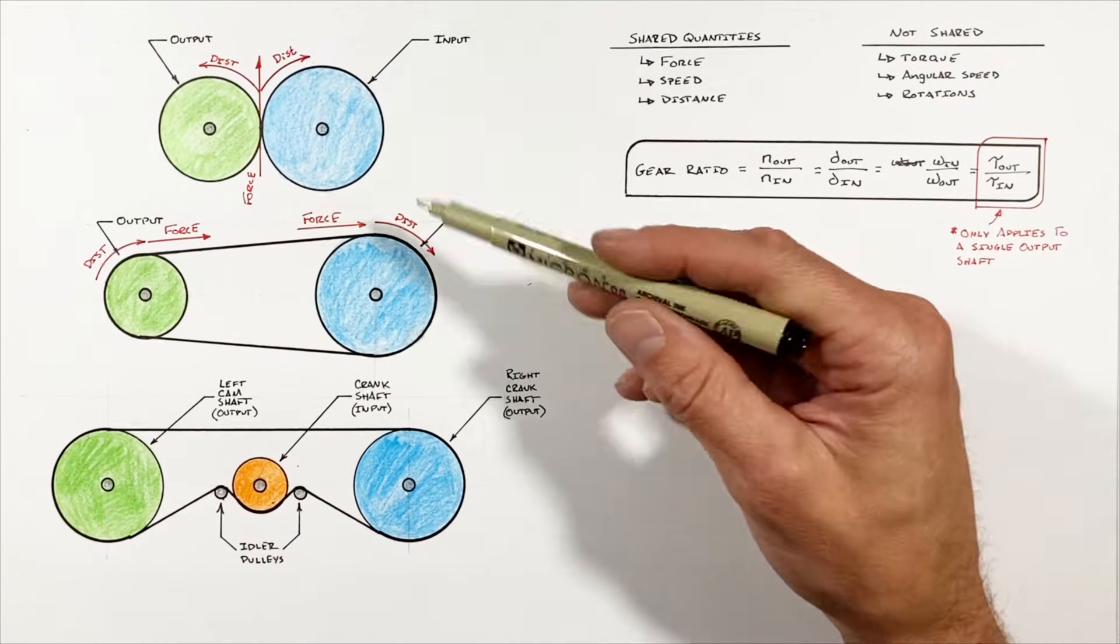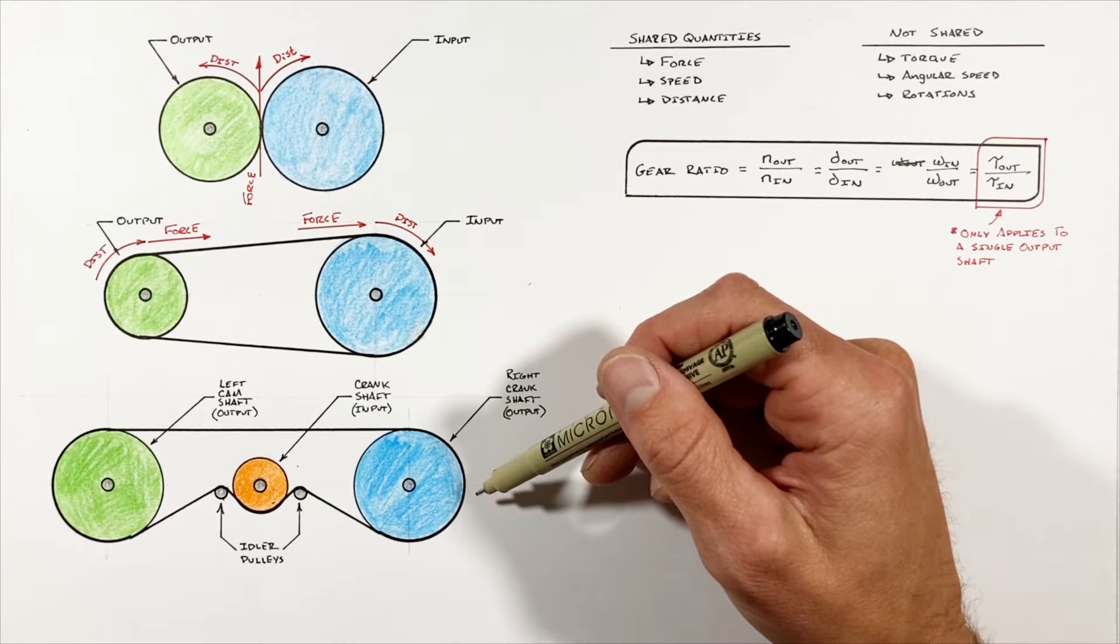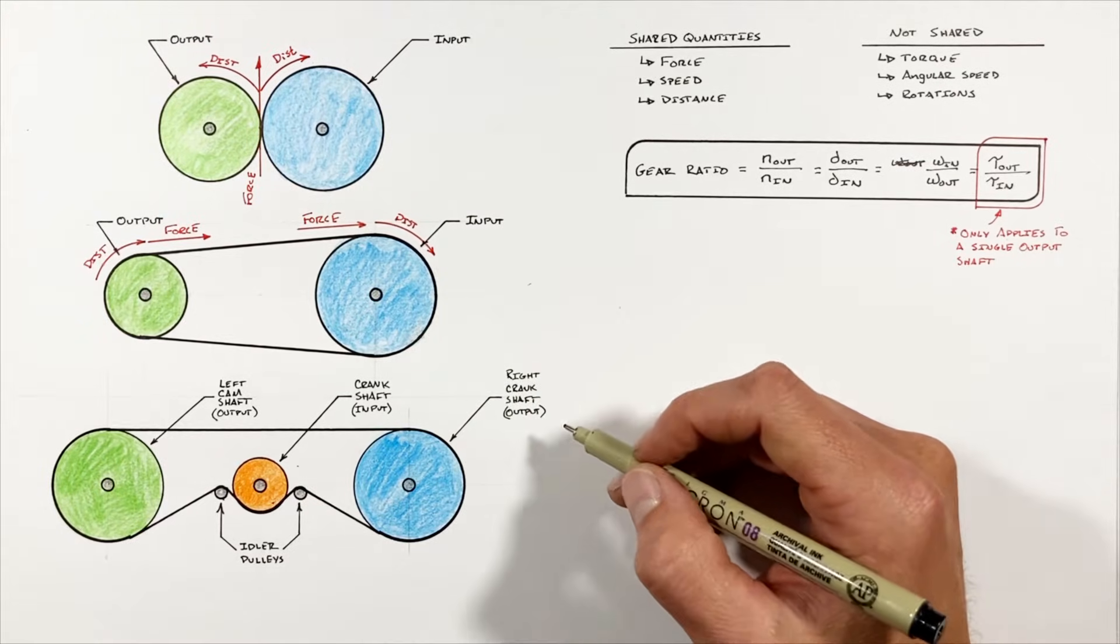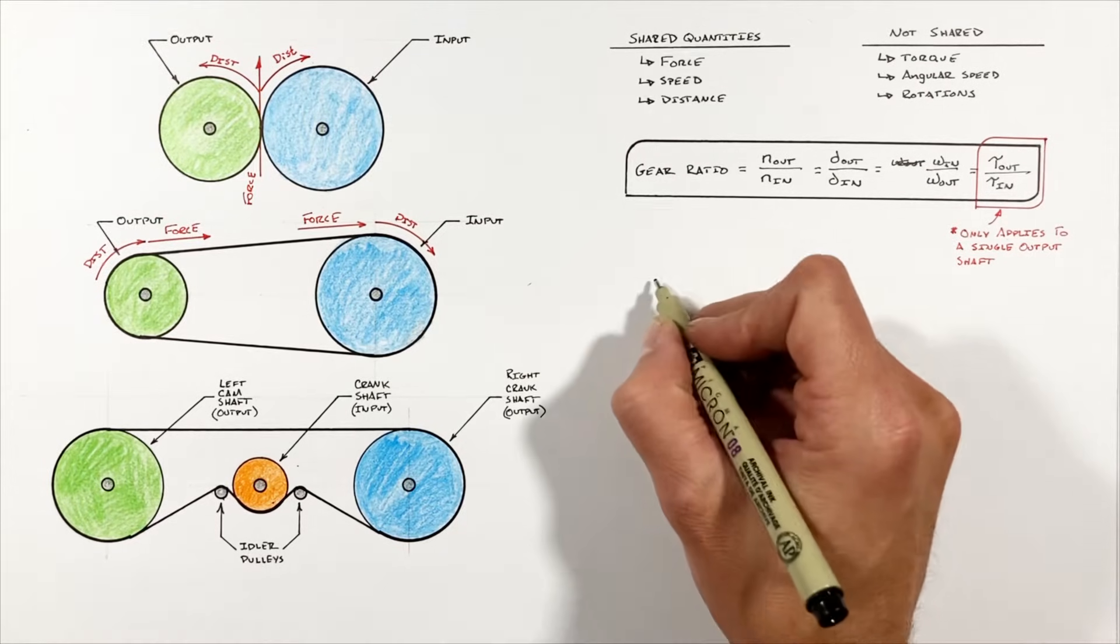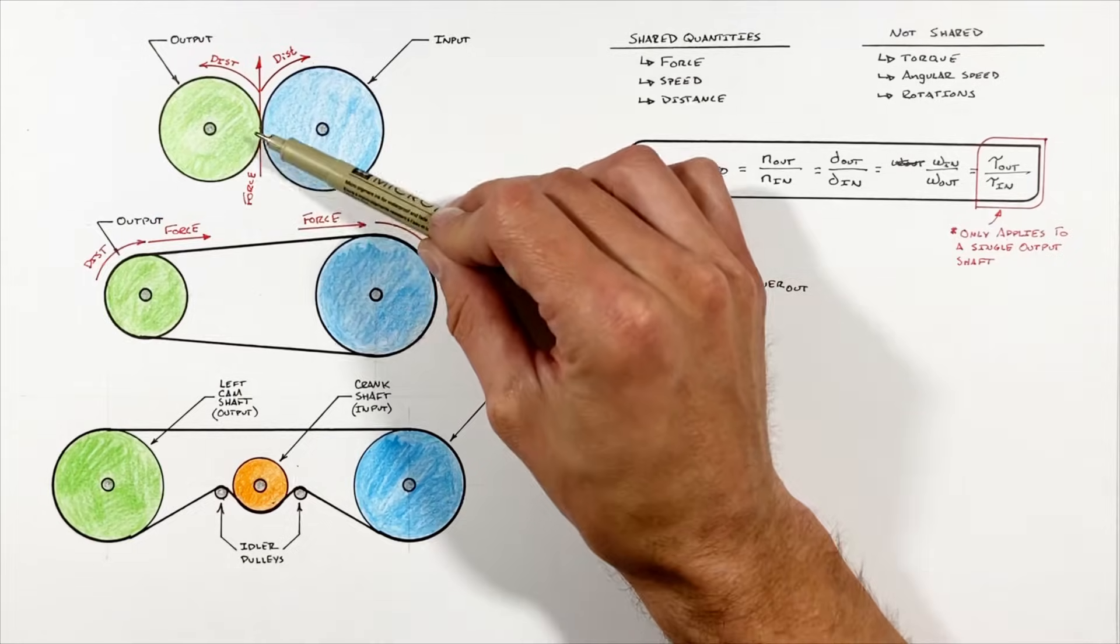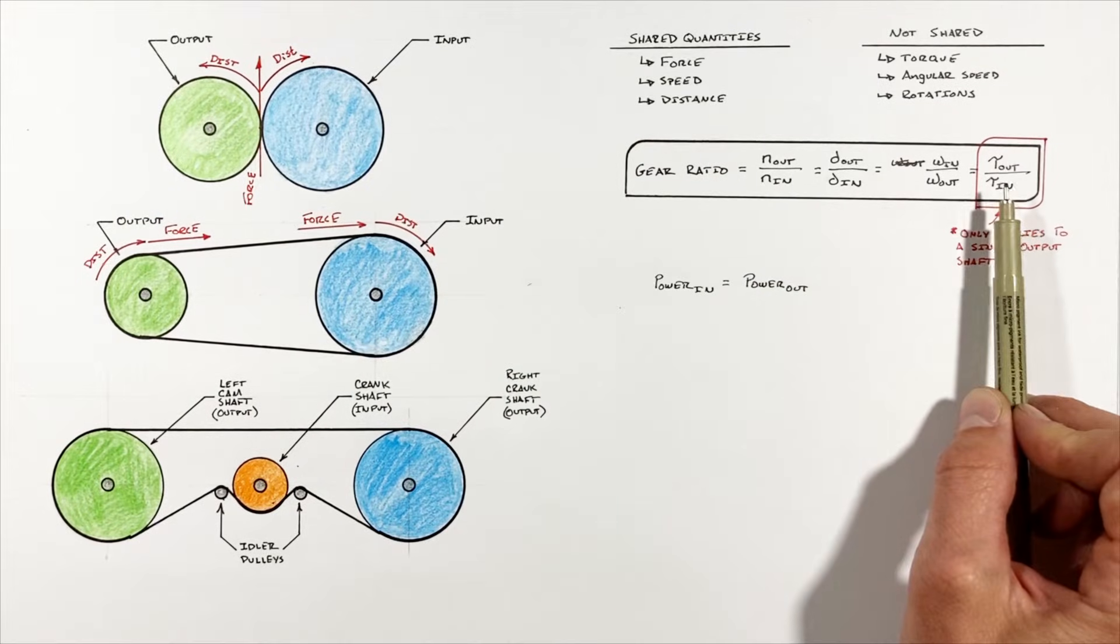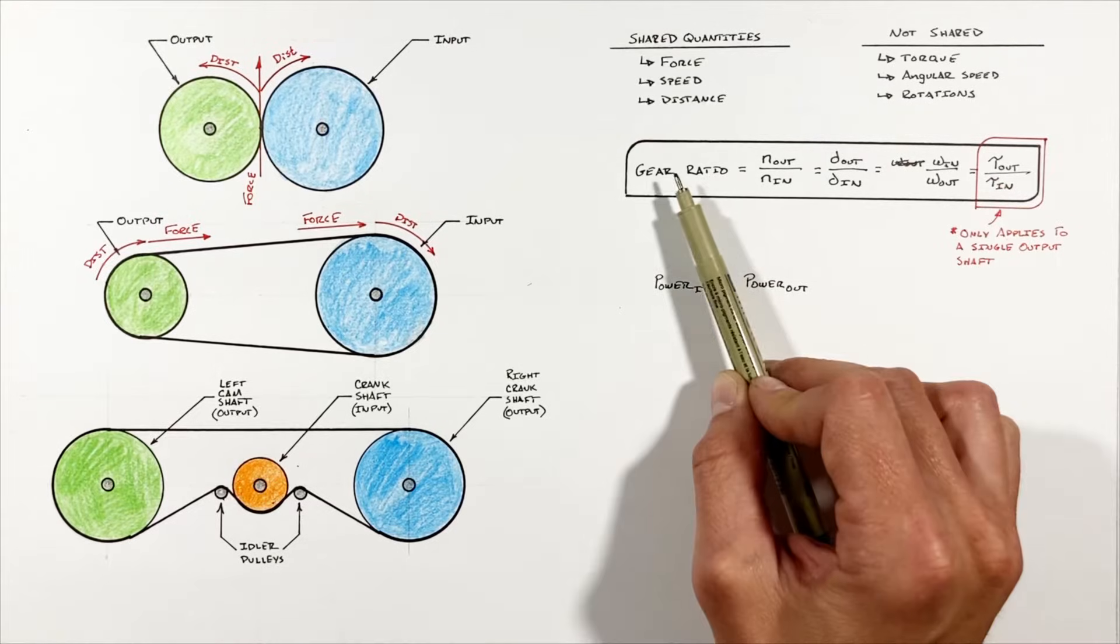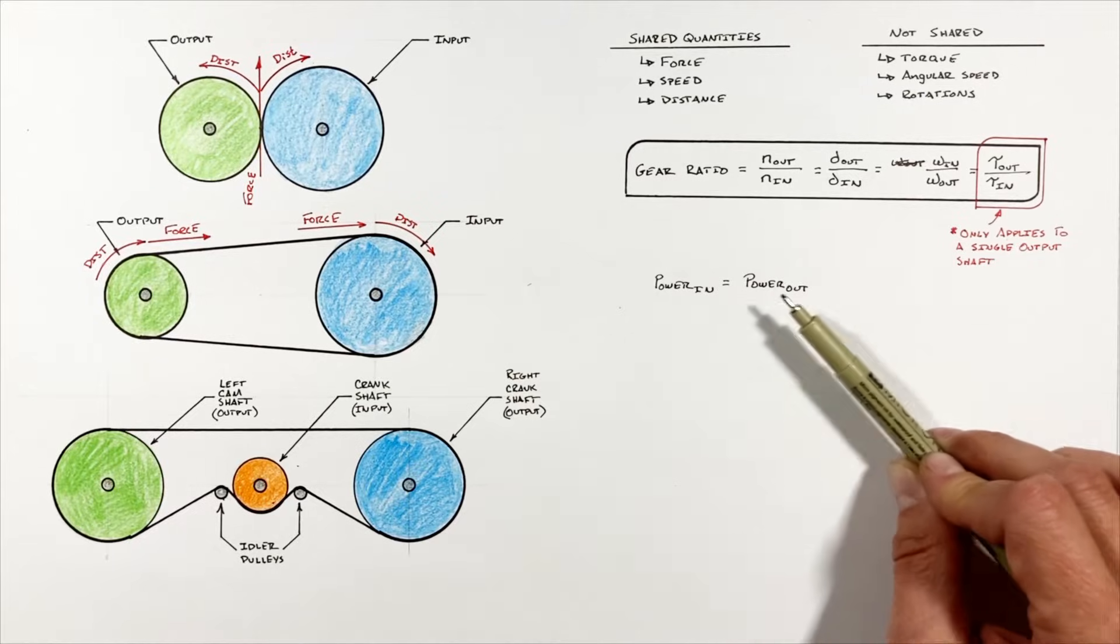So in any gear system, whether that be simple gears or even sprockets and chains or belts and pulleys, so long as we're neglecting frictional losses, the power into the system has to equal the power out of the system. See, in these cases with a single output, that leaves us with this relationship we see here relating torque to the overall gear ratio. But when we have multiple outputs, we have to back up a step to power.